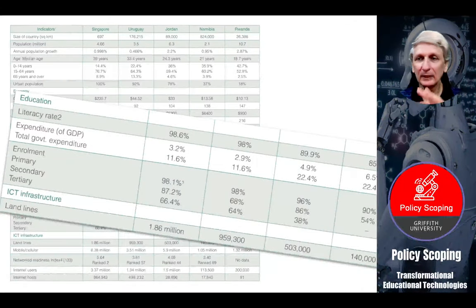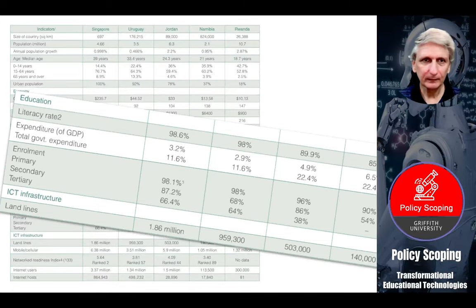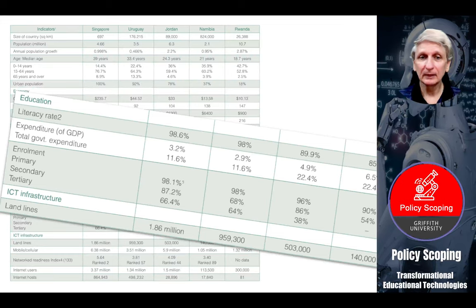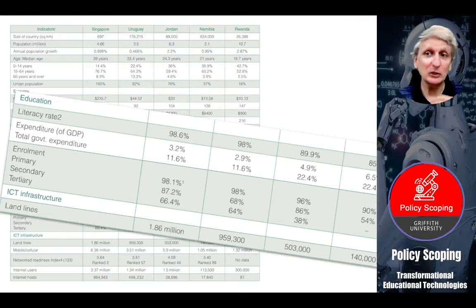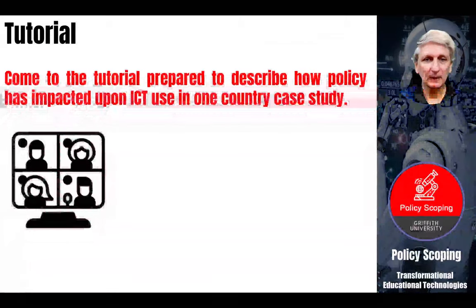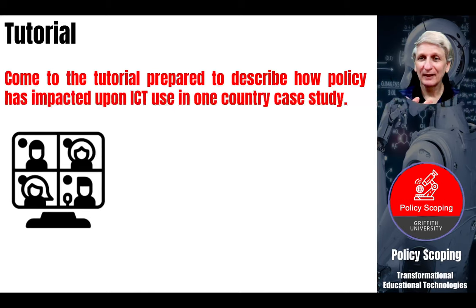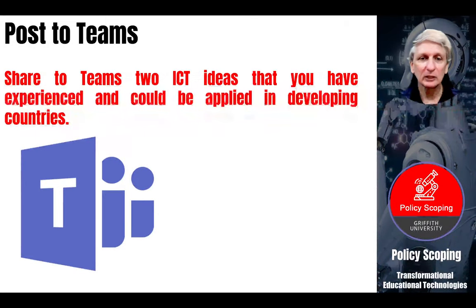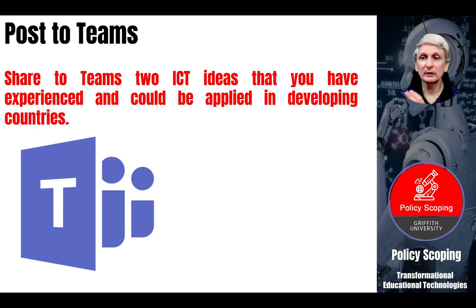Look at the country studies that explore how different countries have approached these various aspects. The countries in this particular study are Singapore, Uruguay, Jordan, Namibia, and Rwanda — relatively different countries with different demographics, different engagements with technology, and different engagements with education and schooling. Look at how they have approached things in different ways, and then in the tutorial we'll explore how various policies have impacted upon ICT use in these different countries. In teams, I'd like you to share two ideas around ICT use that you've experienced that could be applied to developing countries.